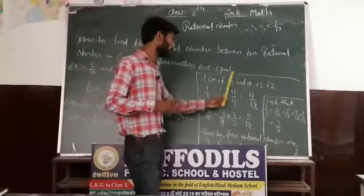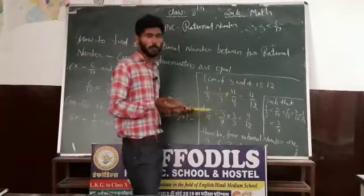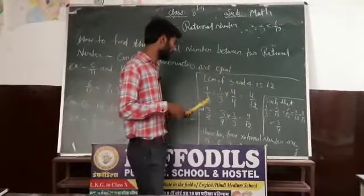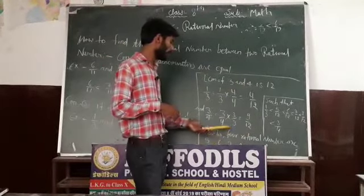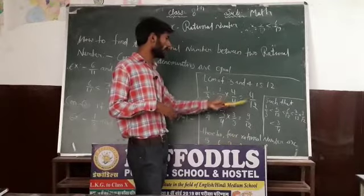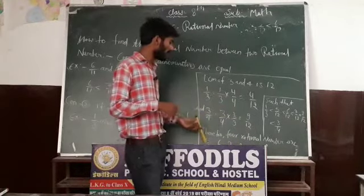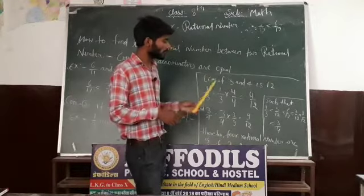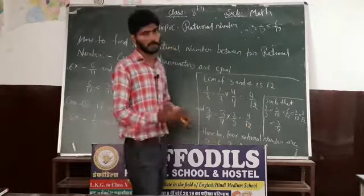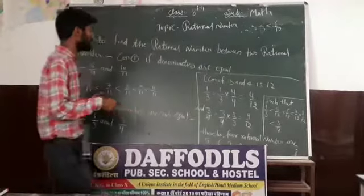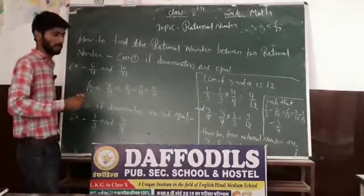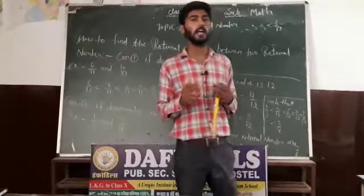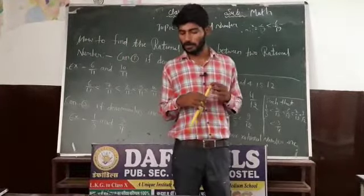So between 4/12 and 9/12, we can find rational numbers very easily. Therefore, the rational numbers between them are 5/12, 6/12, 7/12, and 8/12. So that is our topic — how to find the rational number between two given rational numbers. This is one method; it is an arithmetic method and it is a very easy topic.